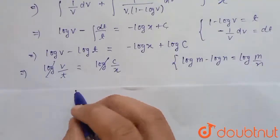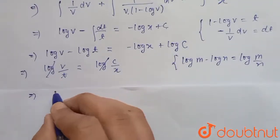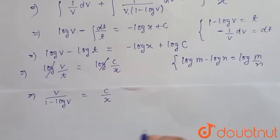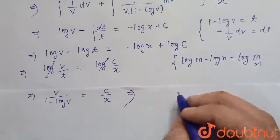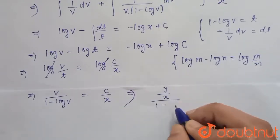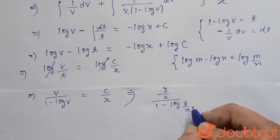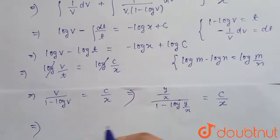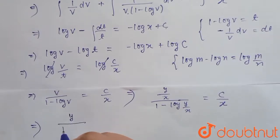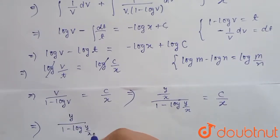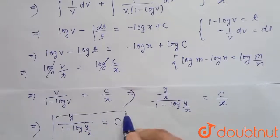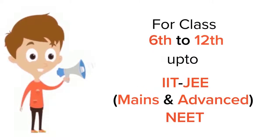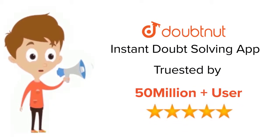Substituting back t equals 1 minus log v, we get v/(1 minus log v) equals c/x. Then substituting v equals y/x, we get (y/x) divided by (1 minus log(y/x)) equals c/x, which simplifies to y/(1 minus log(y/x)) equals c. This is the solution of the differential equation. Trusted by more than 5 crore students — download the DoubtNet app today.